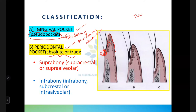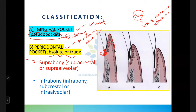A periodontal pocket is called an absolute or true pocket. For it to be called a true periodontal pocket, there must be loss of periodontal attachment. A gingival pocket is caused by coronal movement of the gingival margin, whereas a periodontal pocket is caused by apical displacement of the epithelial attachment.